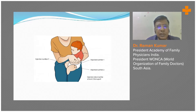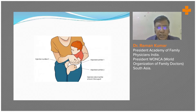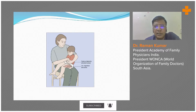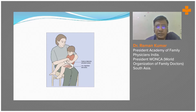Common injection sites among infants: for children below one year of age, it is better to give injections in the lateral part of the thigh. This area is called the vastus lateralis. This is the recommended injection site, and the image also shows how the mother or attendant should hold the baby.